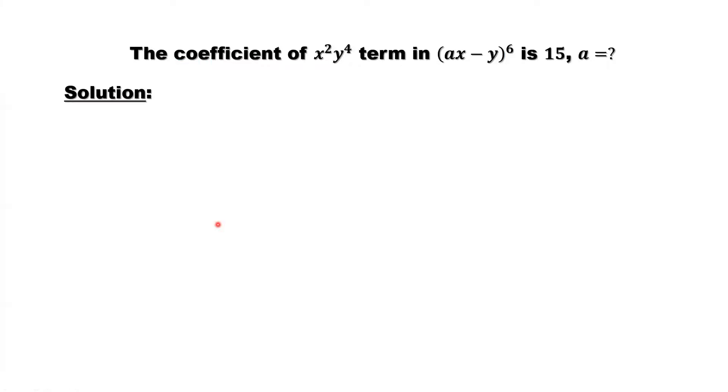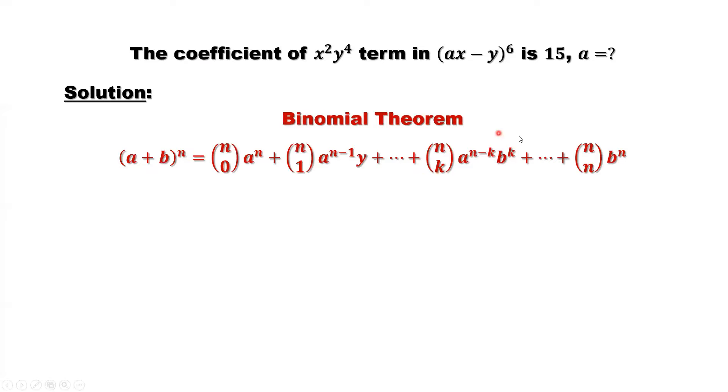Let's review the binomial formula. This part is a general term. In our situation, a equals ax, b equals negative y, n equals 6, what is k?